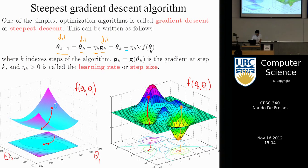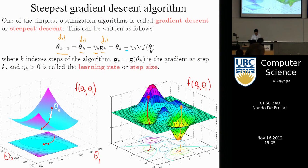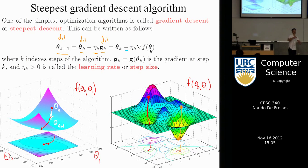We are at location theta_k. If we want to go down, we follow the gradient at each point to get to theta_{k+1}. By going in the opposite direction of the gradient — because the gradient points to the maximum — going opposite means we are moving toward the minimum.